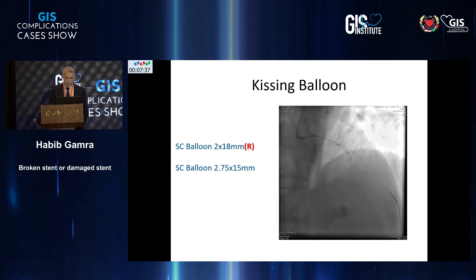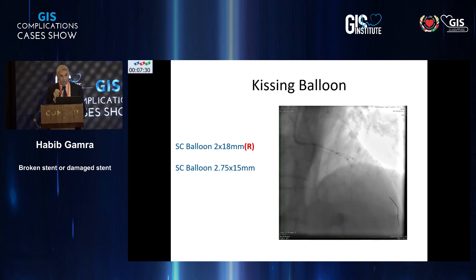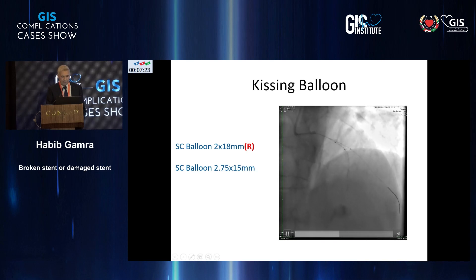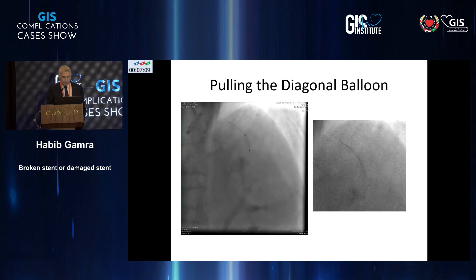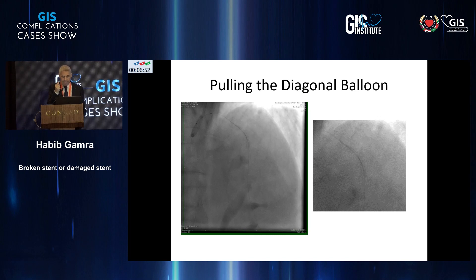At that point, it was decided to have a kissing balloon, which is really important to mention. The balloon that was used for pre-dilation of the LAD — the 2 by 18-millimeter balloon — was actually placed into the diagonal. Another balloon, 2.75 by 15, was placed into the LAD for the kissing balloon procedure. Pulling the diagonal balloon after the kissing, the operator had a hard time because the balloon was stuck to the wire, and he had to pull out everything — balloon and wire — and it was a forceful manipulation.